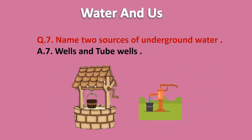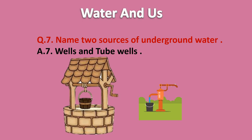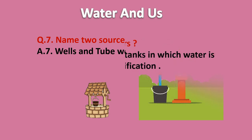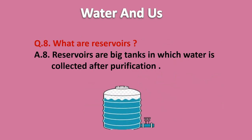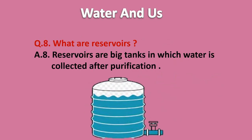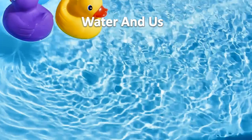Question 7: name two sources of underground water. Wells and tube wells. Water reservoirs. Reservoirs are big tanks in which water is collected after purification.